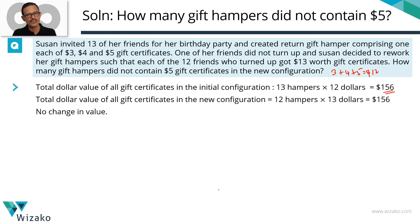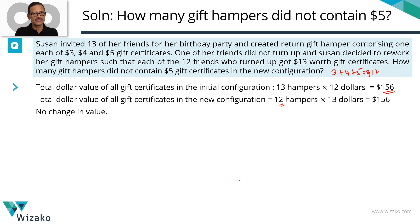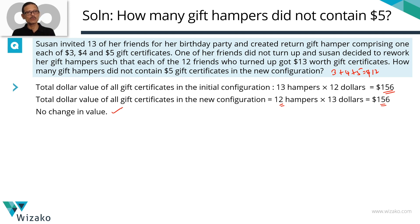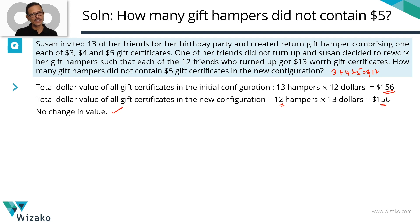Now one friend did not turn up, so 12 of them turned up and she'll make 12 hampers. She's planning to put $13 worth of gift certificates into each one. So 12 times 13 is again the same $156 — there's no dollar value change between what she initially intended to give and now. Initially, all she had to do was pick one $3, one $4, one $5 and put it into a hamper to get $12.